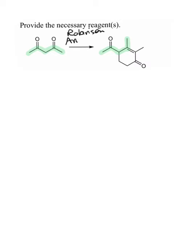A Robinson annulation, and the disconnection we're going to make initially is recognizing that we have an alpha-beta unsaturated pattern here, an alpha-beta unsaturated ketone.